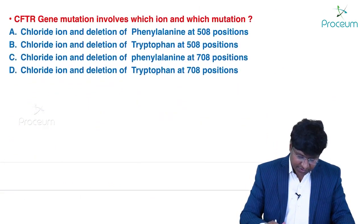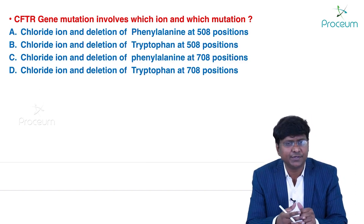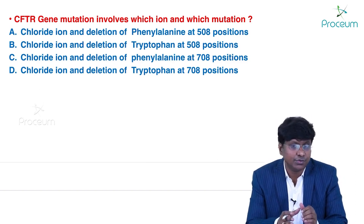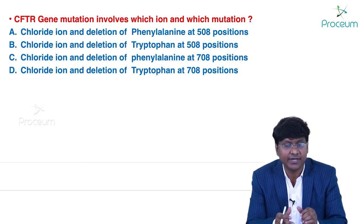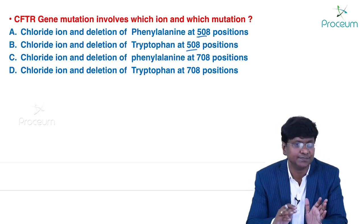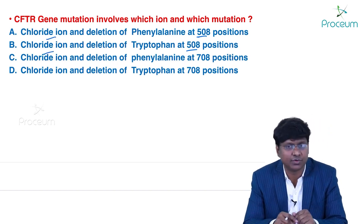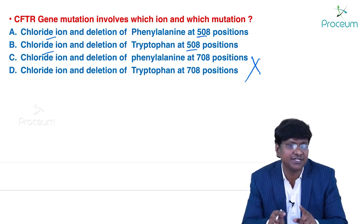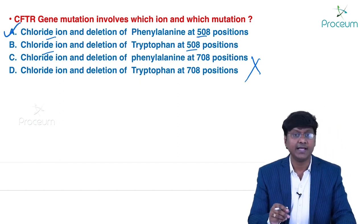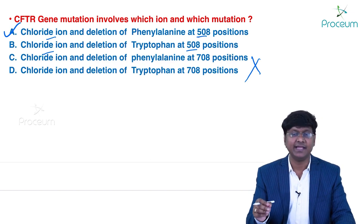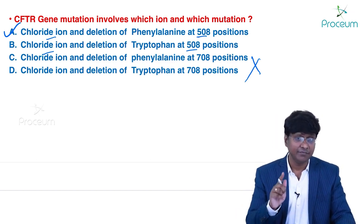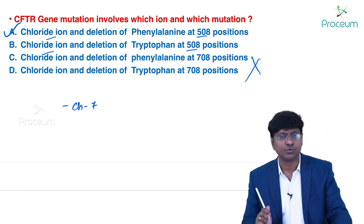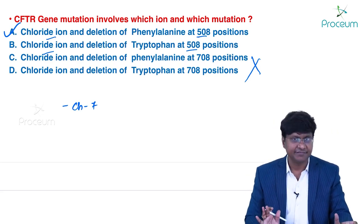The next question is about CFTR gene mutation in cystic fibrosis. The question asks which ion and which mutation are involved. It involves the chloride ion and deletion of phenylalanine at the 508 position (delta F508 mutation). Tryptophan deletion is incorrect. The CFTR gene is located on chromosome 7.